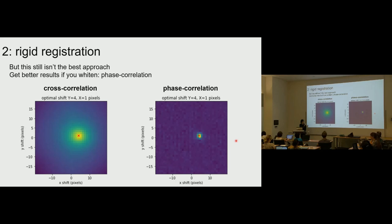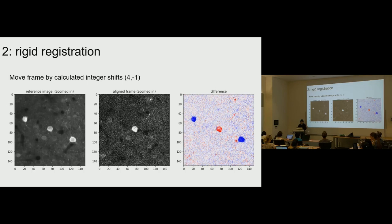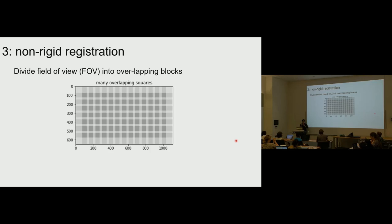With rigid registration, we compute the phase correlation in integer shifts and then move the frame using numpy roll or any shift function. That's the end of rigid registration. In the pipeline, we first rigid register the frames, and then go back and do non-rigid registration, where we divide the field of view into overlapping blocks and try to align each block to the corresponding block in the target image. Doing rigid registration first hopefully gets rid of large shifts, making non-rigid easier.